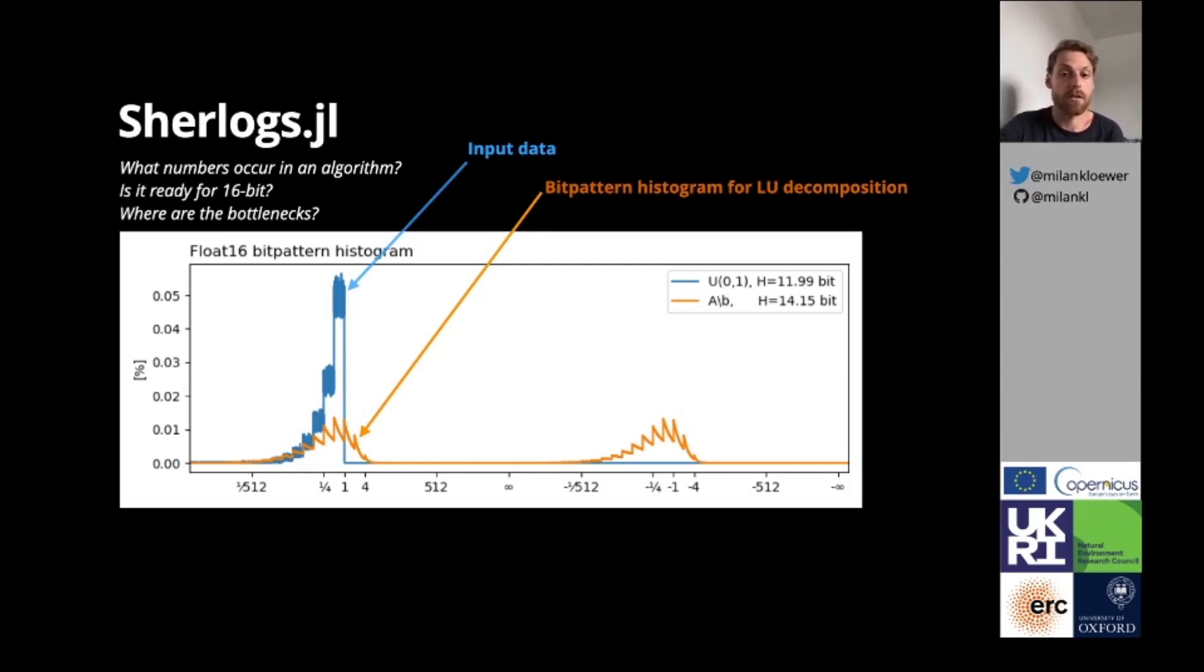However, in the LU decomposition, positive as well as negative numbers are actually used, with most absolute values between 10 to the minus 3 and 4. This suggests that there is a negligible risk of over- or underflow, and we could probably get away with fewer exponent bits.